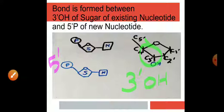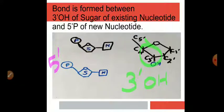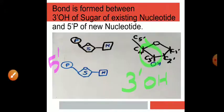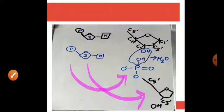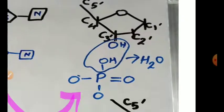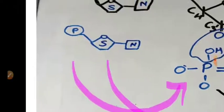So here, this is 3'OH of the sugar and 5'P of the new nucleotide. This is the same as the sugar and phosphate. With this P, this is the same as the phosphate group.